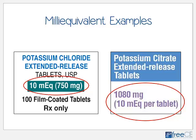On the slide are two potassium labels. On the left, potassium chloride: 10 milliequivalents equals 750 milligrams. On the right, potassium citrate — a different salt form: 10 milliequivalents equals 1080 milligrams. So a milliequivalent is not the same as a milligram, and each milliequivalent value differs depending on the salt form and the drug.